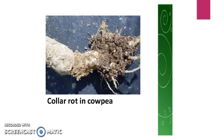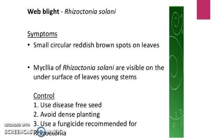Here is a picture of what collar rot in cowpea looks like. It is one of the most severe soil-borne diseases due to environmental conditions like high temperature and humidity, causing severe yield loss. Collar rot is most severe at the seedling stage.